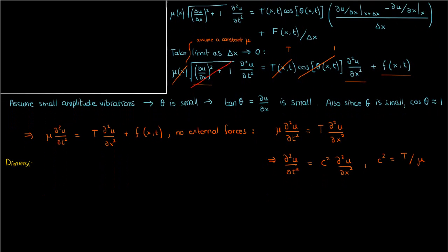You can actually do a bit of dimensional analysis to show that because the second partial of u with respect to t has dimensions of length over time squared, and because the second partial of u with respect to x has dimensions of length over length squared, the parameter c has dimensions of length over time.